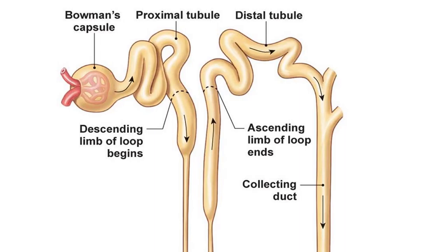In the distal convoluted tubule, more reabsorption of calcium, sodium, water, glucose, ions, and amino acids occurs - all the things the body didn't want to lose in the first place. By this time the filtrate is basically urine, and it finds its way to the collecting duct. Multiple nephrons feed into one collecting duct, which dives down into the salty, hypertonic medulla.